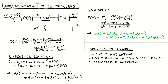Before we get to the implementation of the controller, let's revise the digital control system configuration. The continuous time plant is described by the transfer function g. The continuous time output is y, which is sampled to form y. It is then subtracted from the reference input r to form the error signal e, which is also the input to the controller. The designed controller is given by the discrete time transfer function d, whose output u is passed through a zero order hold circuit, after which it forms the plant input.